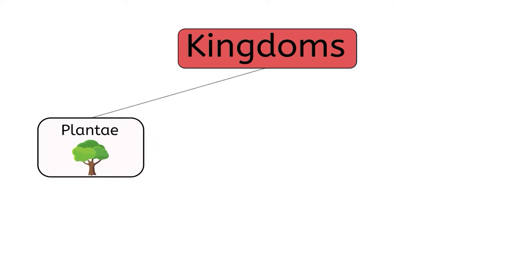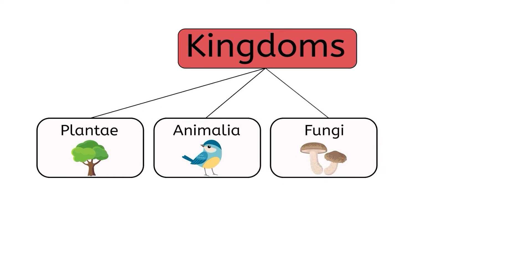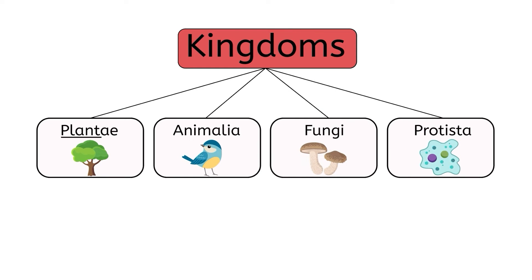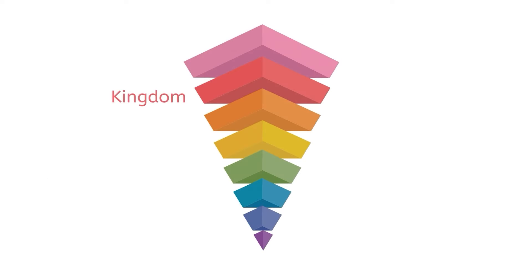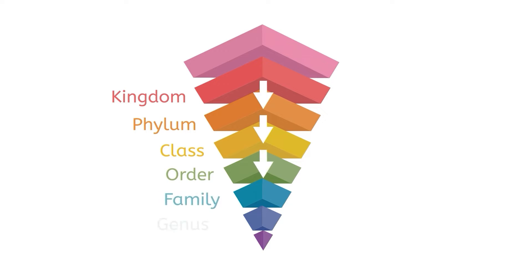The four kingdoms of eukarya are plantae, animalia, fungi, and protista. Plantae and animalia are basically fancy words for plants and animals. Fungi includes funguses such as mushrooms and molds, and protista includes all eukaryotes that are not plants, animals, or fungi. Kingdoms are then divided into various phyla, which are divided into classes and so forth down the chain, becoming more and more specific until we eventually reach the species level.